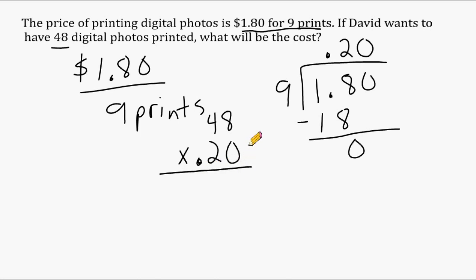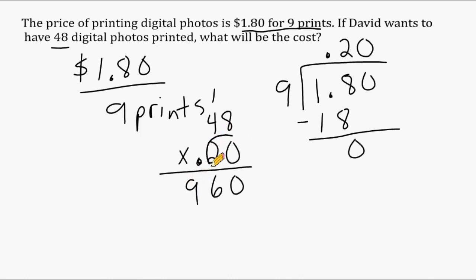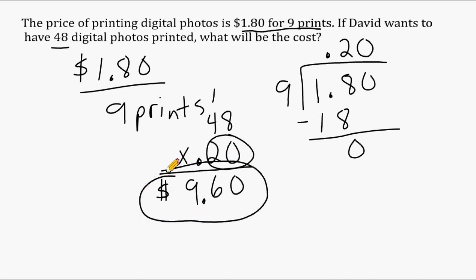Multiplying: the first digit is 0 so bring it straight down, then 2 times 8 is 16 — put a 6 and carry the 1. 2 times 4 is 8, plus 1 more is 9. We have two decimal places in the problem so the same must be true in our answer. Altogether, David would end up paying nine dollars and sixty cents for 48 photos.